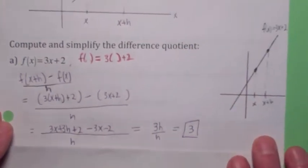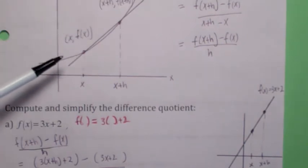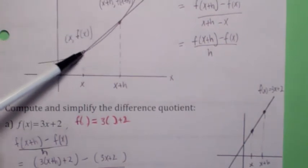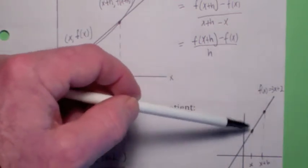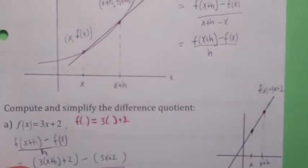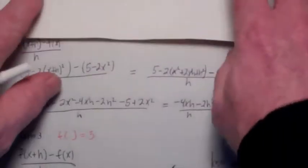And again, it shouldn't be too surprising, because remember, the difference quotient is just the slope of the line on the graph of f(x) that goes to the point (x, f(x)) and (x+h, f(x+h)). Here, since the function is linear, the slope of that line is the same as the slope of the function. It doesn't always work that way.